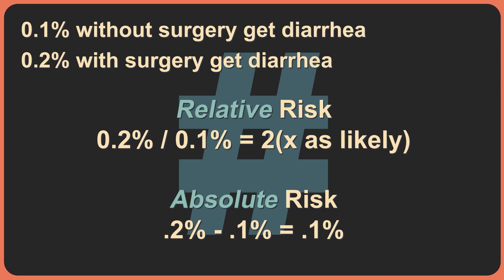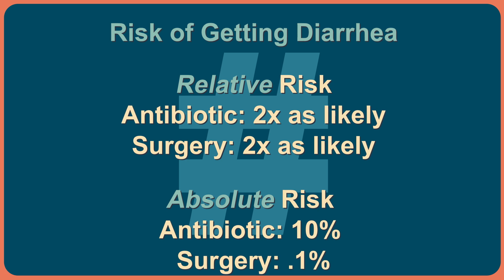Here's another example. Let's say that 0.1% of people who don't have surgery for a certain illness get diarrhea, and 0.2% of people who have the surgery develop diarrhea. If you go with relative risk, then surgery doubles your risk of diarrhea. If you go with an absolute risk, then surgery increased your risk from 0.1% to 0.2%, so your risk went up by 0.1%. In relative risks, these two examples are similar — they both doubled the risk. But in absolute risks, they are way far apart.